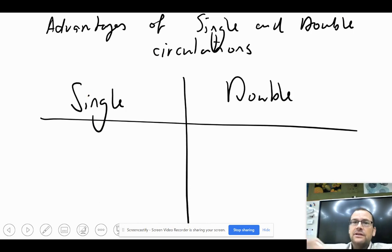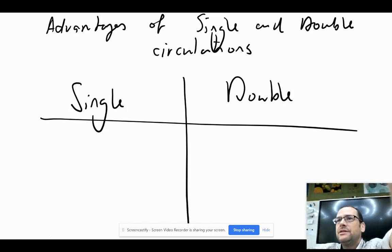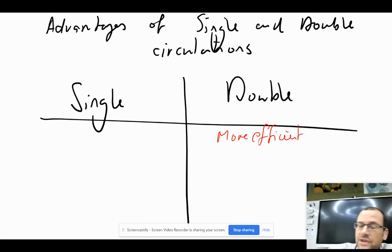What are the advantages of both single and double circulatory systems? Let's do advantages of the double first. So it's more efficient, and the single circulation pumps blood twice, so actually the higher pressure, blood pressure is kept high in the blood vessels.